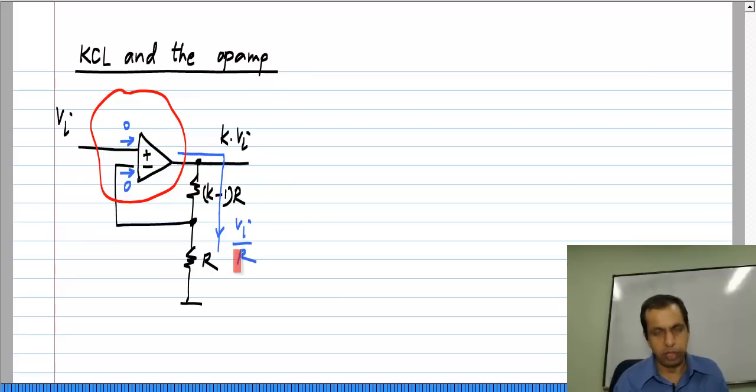The current coming out of the op amp is Vi by R. In fact, I could add a load to it, then a current KVi by RL will flow that way. So the total current coming out would also include KVi by RL. It will be Vi by R plus K times Vi by RL and these are zero.